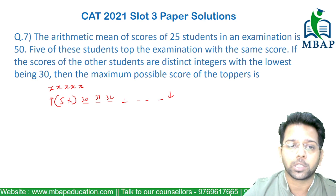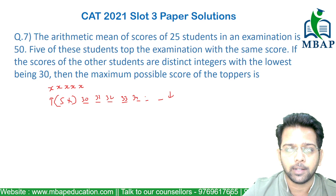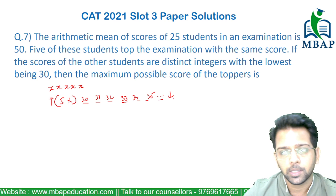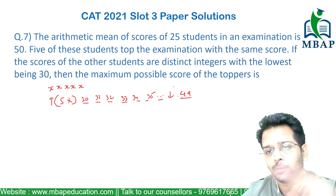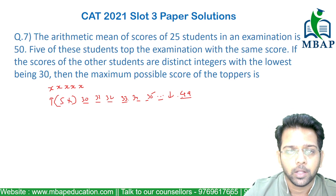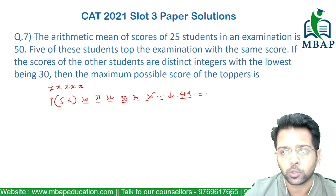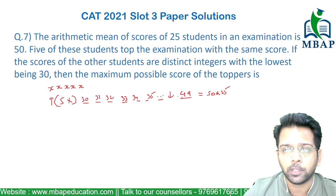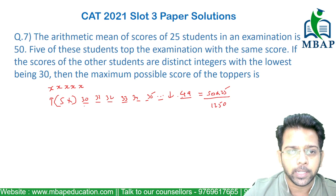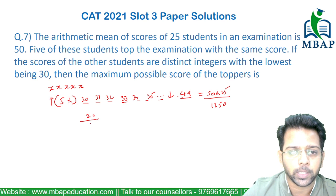The other 20 scores take the lowest possible distinct values: 30, 31, 32, 33, 34 ... up to 49 — that's exactly 20 numbers. The total of all 25 students must be 1250, since the average is 50. The sum of 30 to 49 is an AP, calculated as (20/2) × (30 + 49) = 10 × 79 = 790.